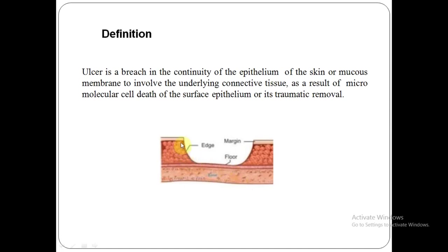So you can see that the connective tissue is involved here. If the connective tissue was not involved and it was just a superficial area, this could have been called an erosion. Only since the connective tissue is also involved, it is called an ulcer.